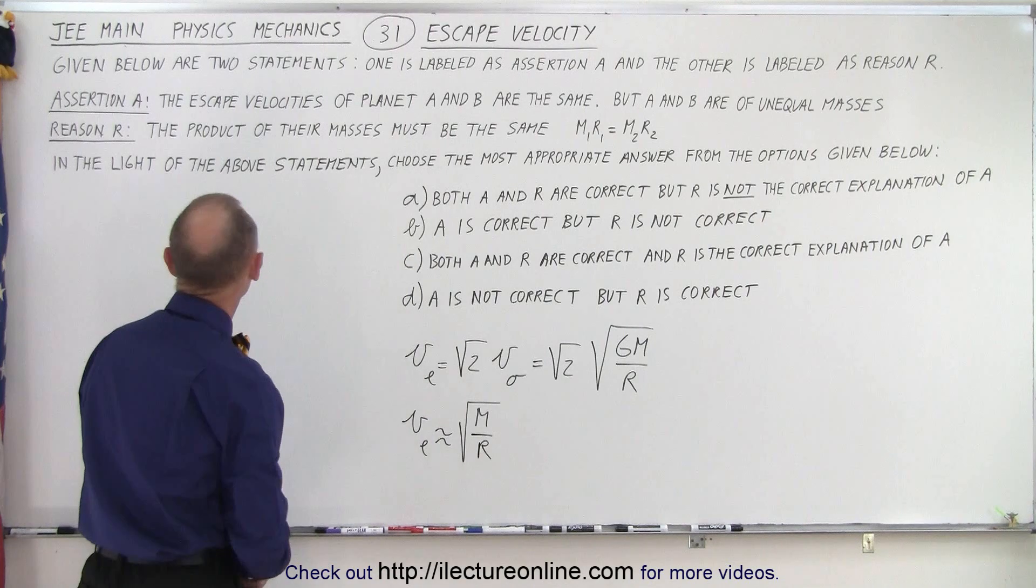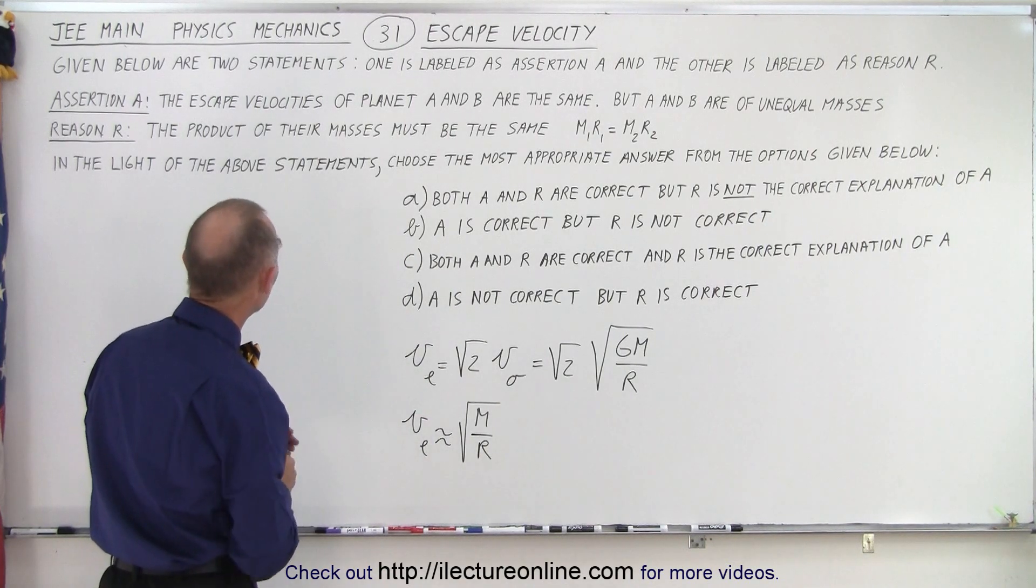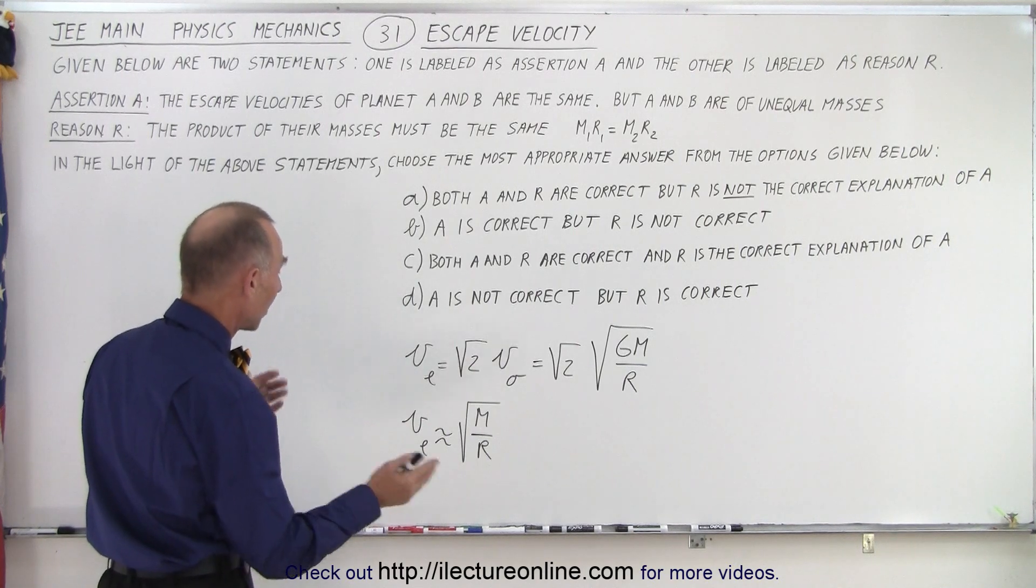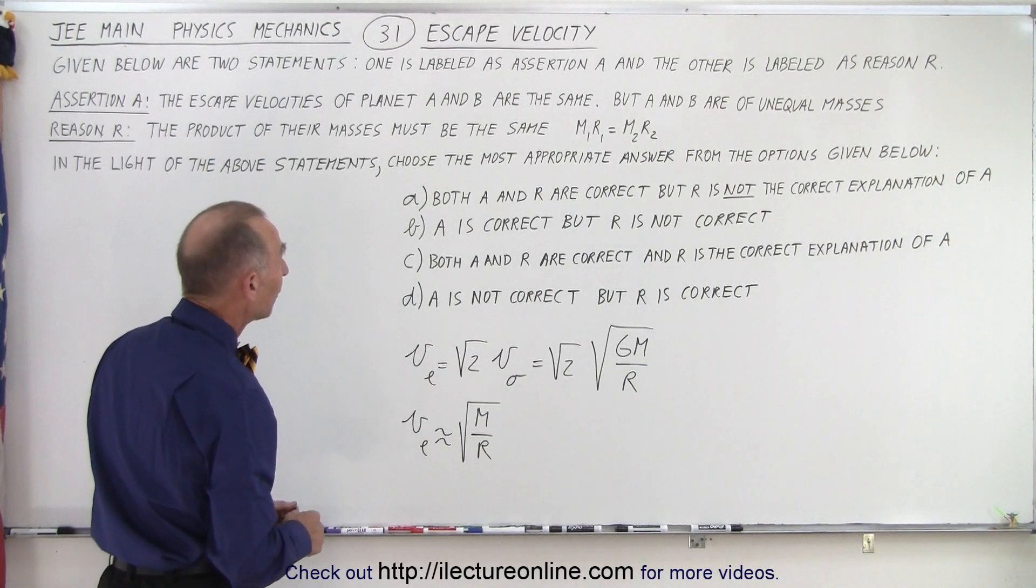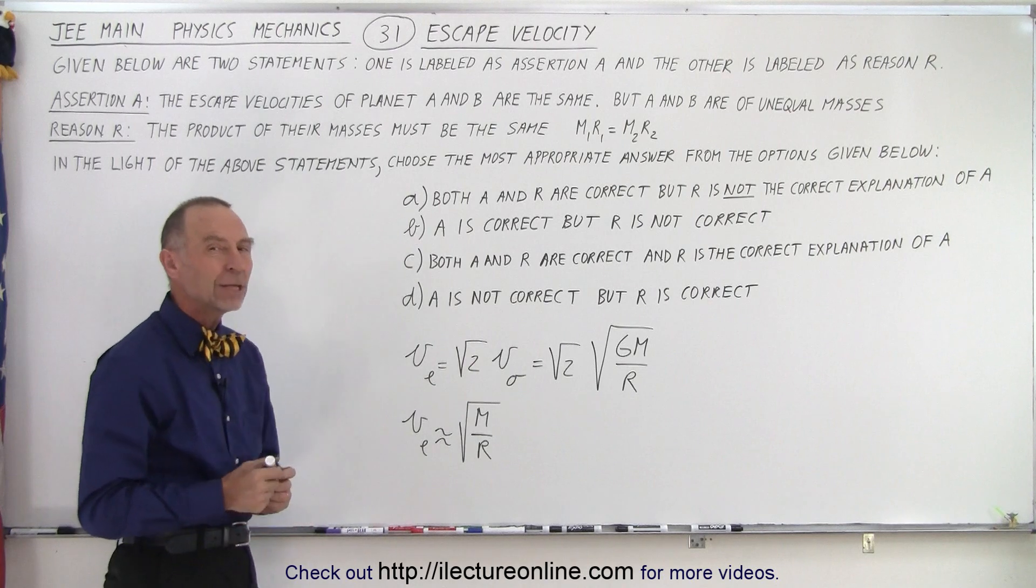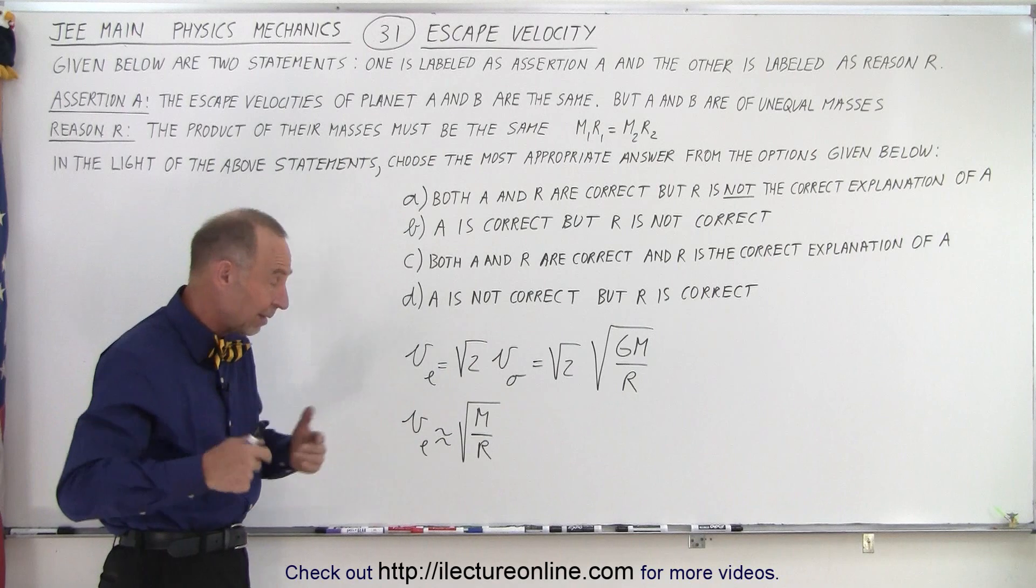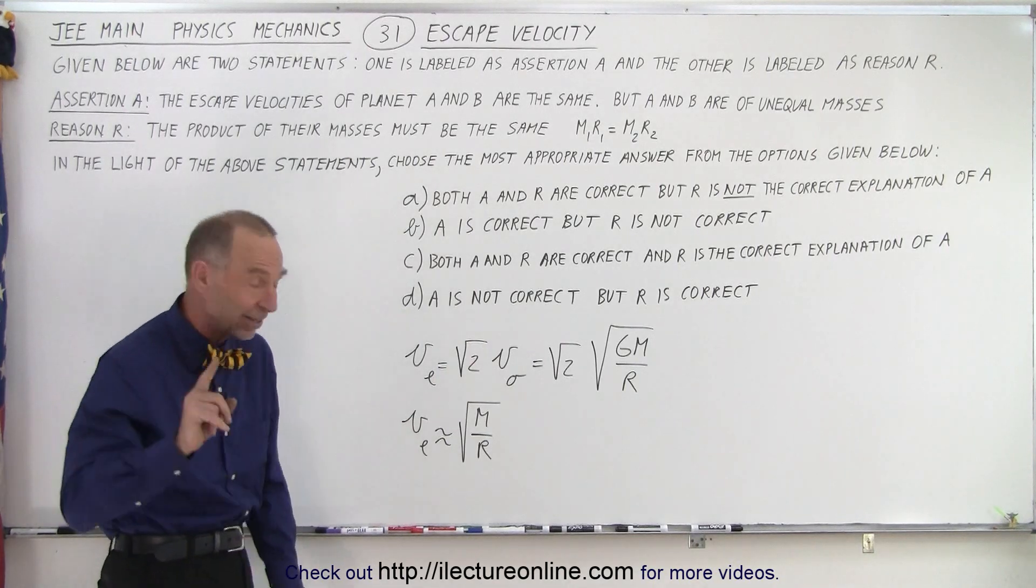Now, let's take a look at assertion A. It says that the escape velocities of planet A and B are the same, so I have two planets, but A and B are of unequal masses. Is that possible? Can you have two planets of different masses that have the same escape velocity?